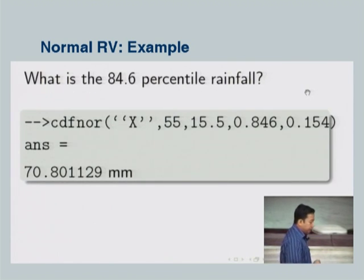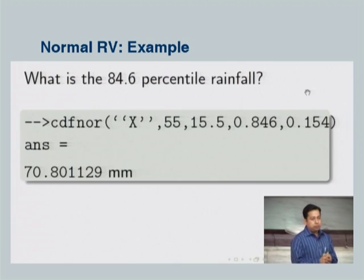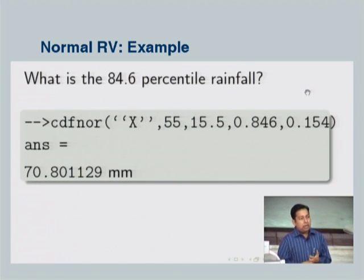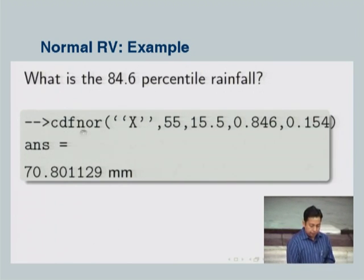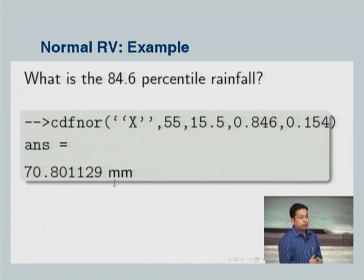Now the other direction: what is the 84.6th percentile rainfall? For design purposes, guidelines often ask you to design for a given percentile. We use the inverse cdfnor command with mean 55 and sigma 15.5, CDF equal to 0.846, and q equal to 1 minus p. We get 70.8 mm — and you can now design with this intensity of rainfall.